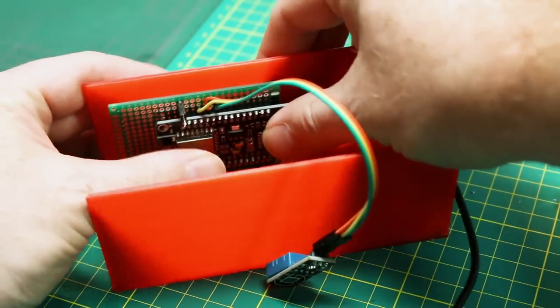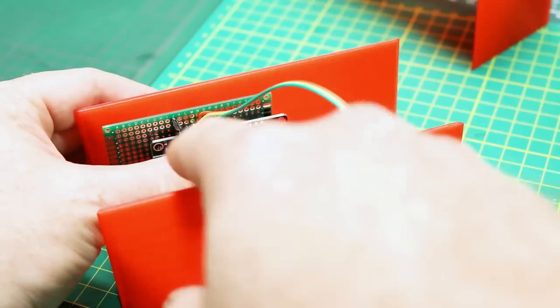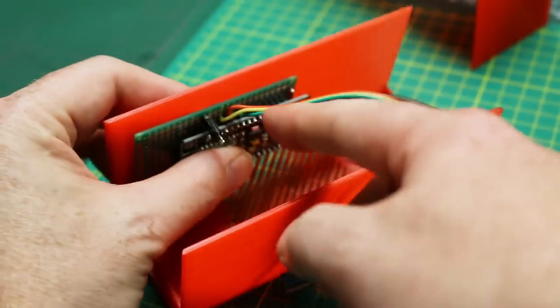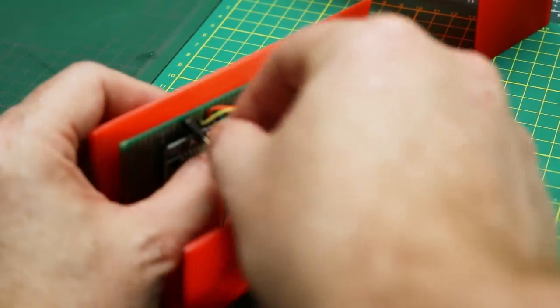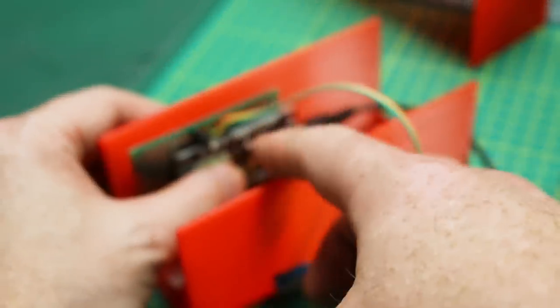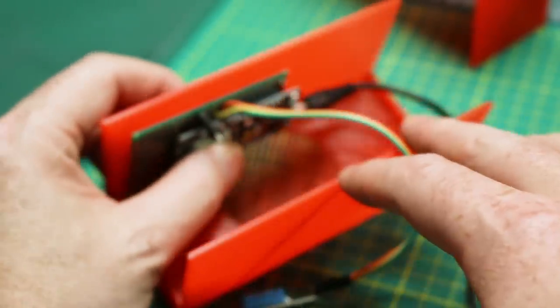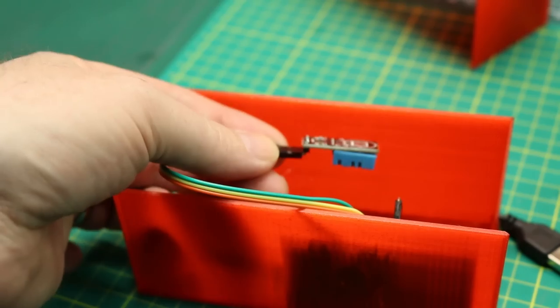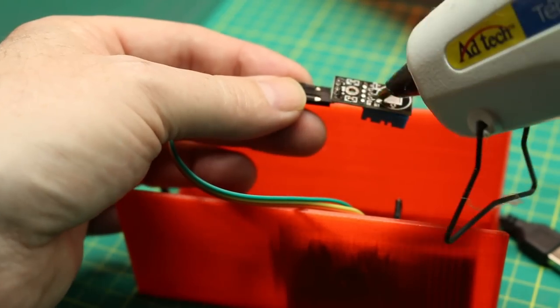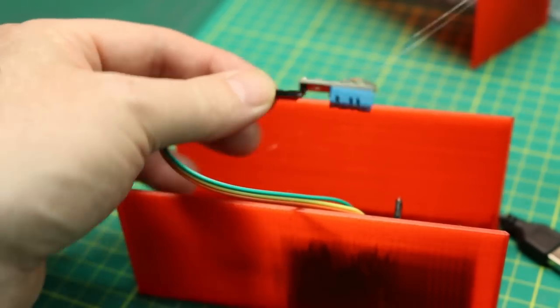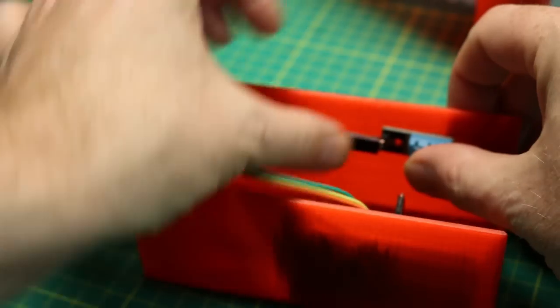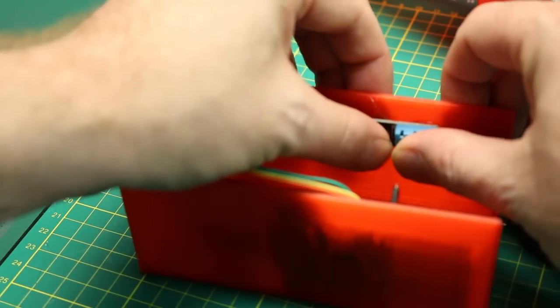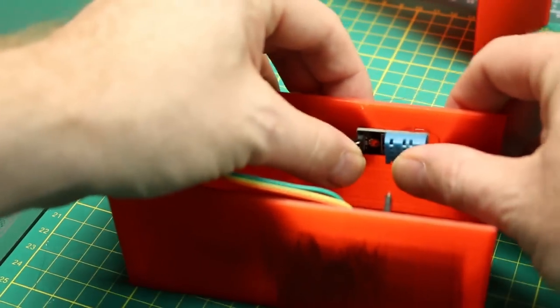Just like that, we'll let that set up. That way we can still access our jumper here to program it. Remember, we've got to pull this jumper - that's the wake up that shorts our reset line and allows us to program it. If we remove that, for the far side we'll just add a little bit of glue to our DHT11 and let's just set it right about here.